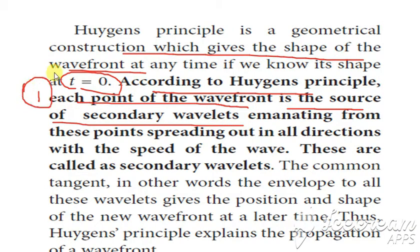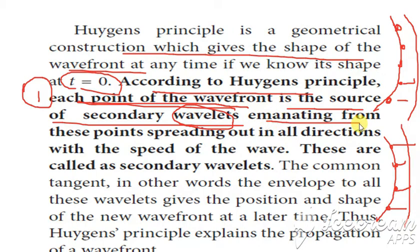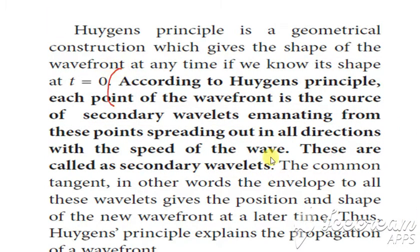Each point on the wavefront acts as a source, forming secondary wavelets. These wavelets emanate from these points and spread out in all directions with the speed of the wave. The wavelets formed are called secondary wavelets. This is the main thing in Huygens' principle.